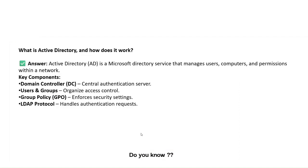What is Active Directory and how does it work? Active Directory is Microsoft's directory service that manages users, computers, and permissions within a network. The important component is the Domain Controller, which is the central authentication server. It manages users and groups — for example, IT, admin, and HR — and we can give specific access to specific departments. Group Policy defines which policies apply to which department. The LDAP protocol handles all authentication requests.